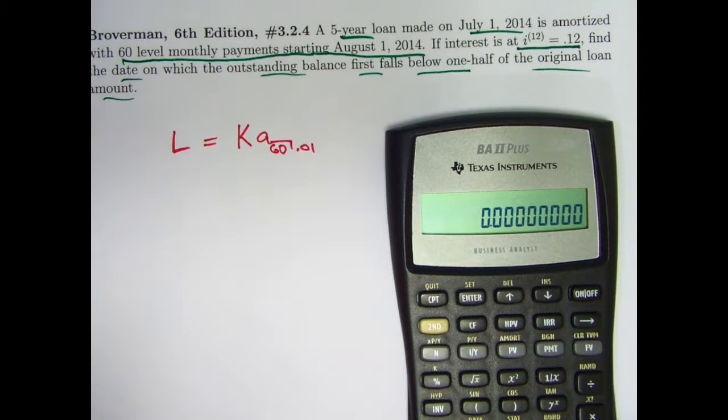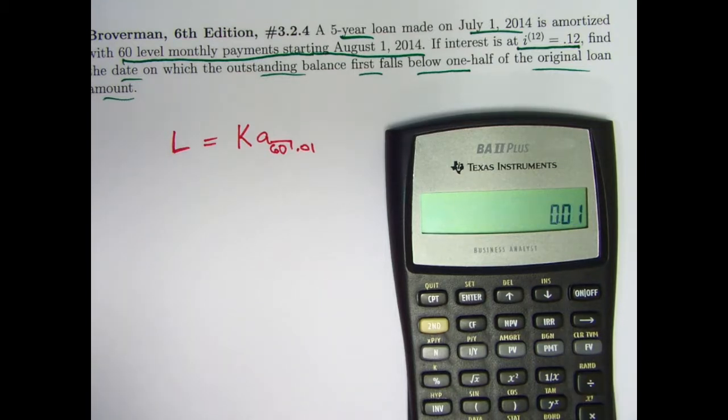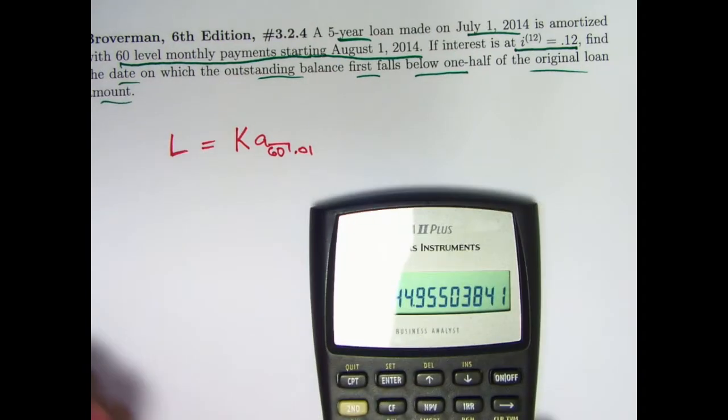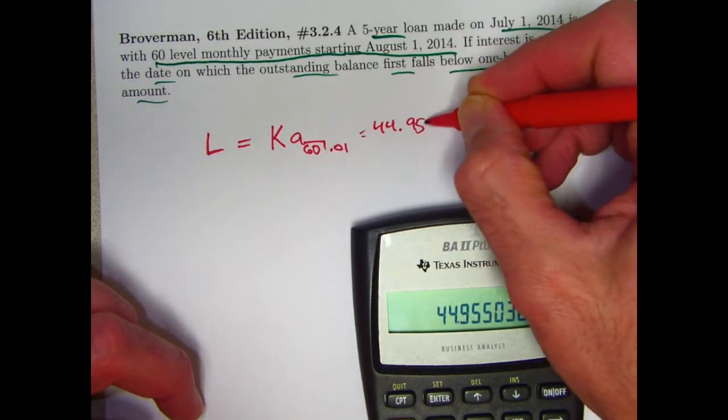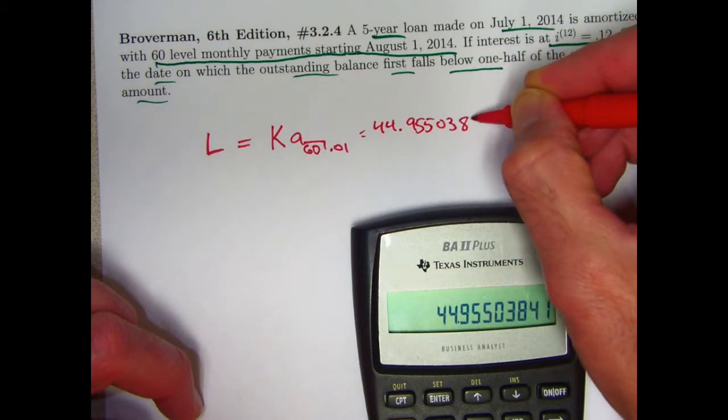So the monthly interest rate is 1%, take 1.01, take its reciprocal to get V, the monthly V discount factor, raise that to the 60th power, subtract from 1, divide by .01, the monthly interest rate. The present value here, this A, is 44.95503841.